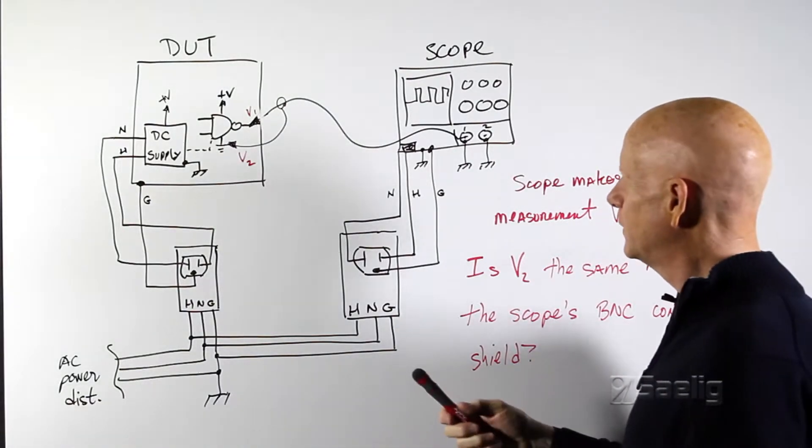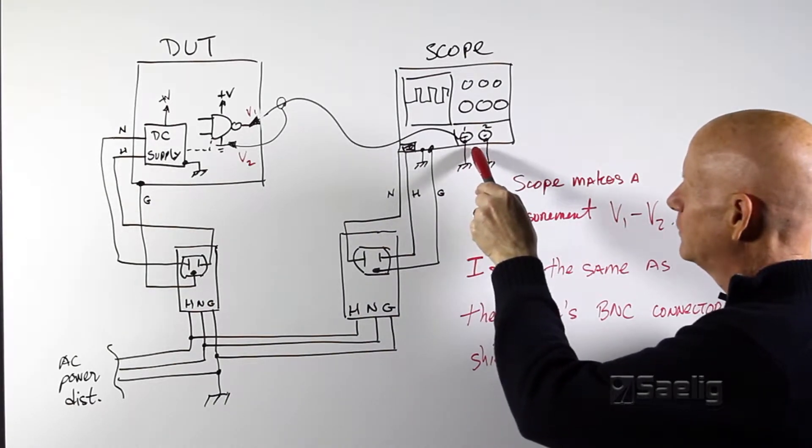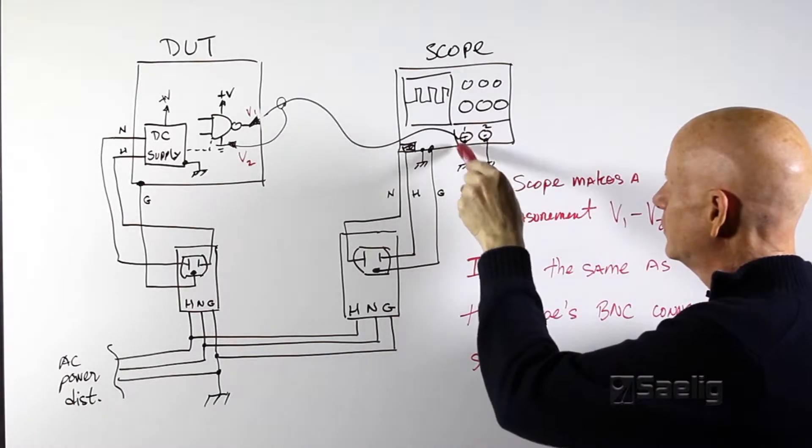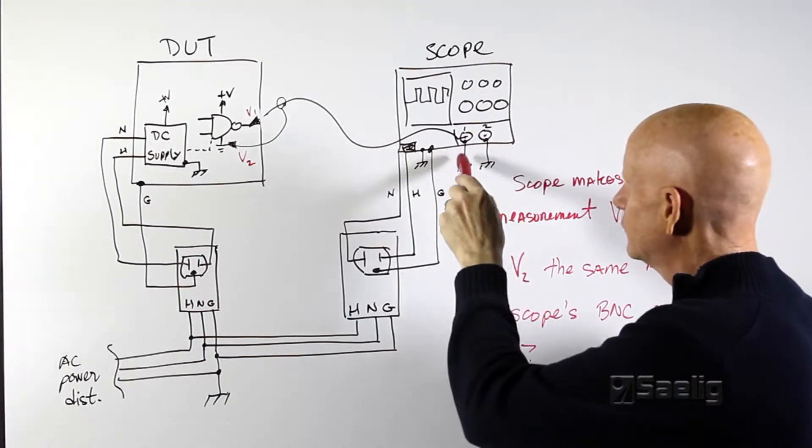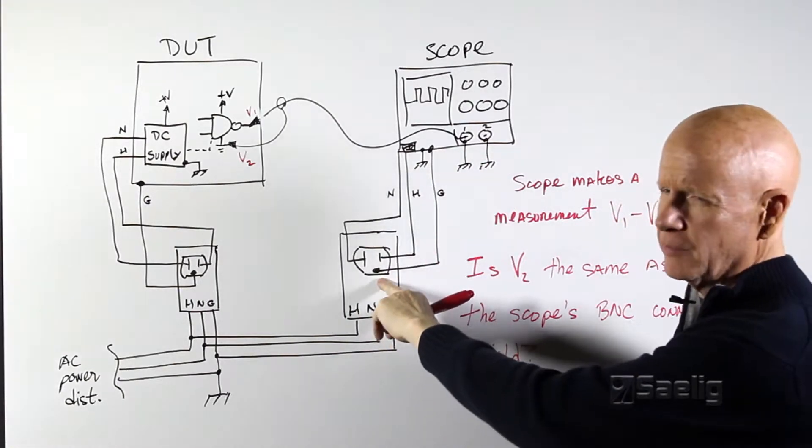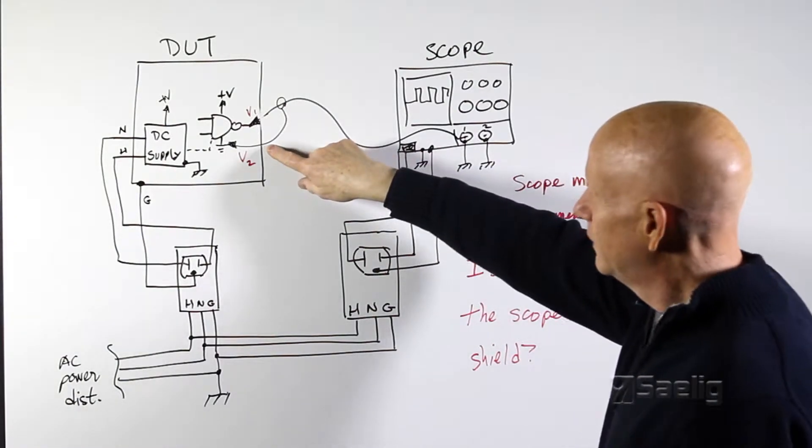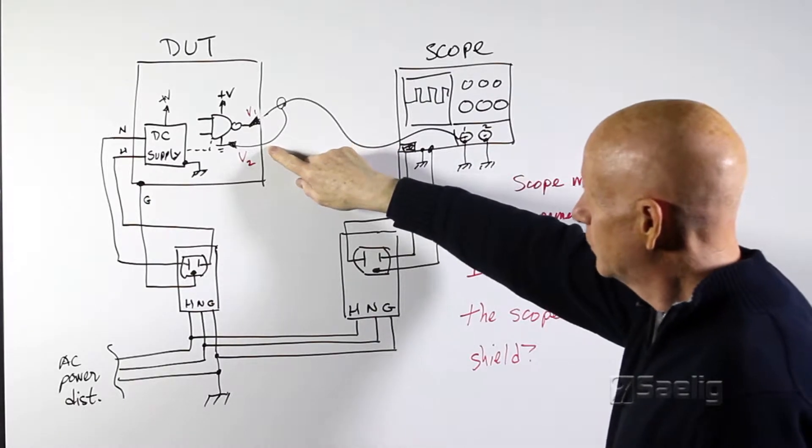So you can get out an ohmmeter and just verify this, but usually for most scopes that we find, the shield around the BNC connectors of your two or four inputs, they're actually referred back to the same ground point as the ground pin on the power plug here. So that means that that's exactly what this ground lead is connected to as well on the scope probe.